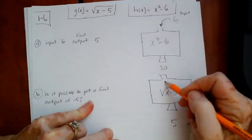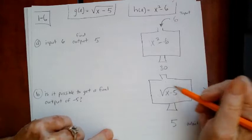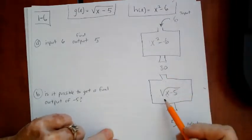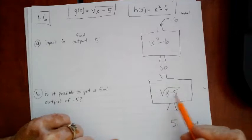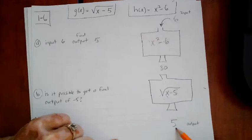And that's going to go into the second function machine. So I'm inputting 30 into here. We've got 30 minus 5. That gives me 25. And the square root of 25 is 5. And that's what I wanted.